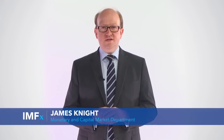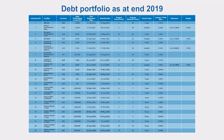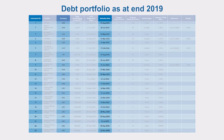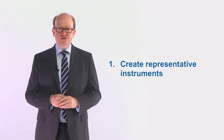Let's consider an existing debt portfolio as at December 31st, 2019. For each instrument, we assume that we have the principal and interest payments until maturity from the debt recording system in their original currency. If not, we need to calculate these data for each debt instrument in line with the process for calculating cash flows. Step 1: first, we have to create the representative instruments.